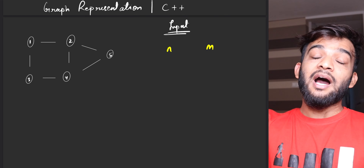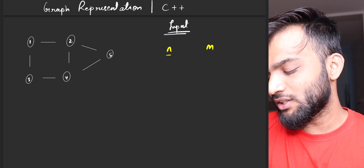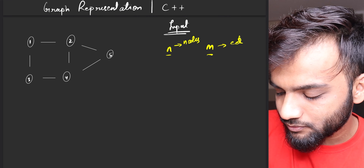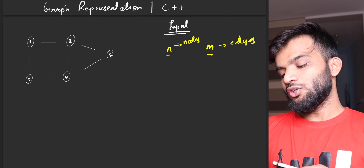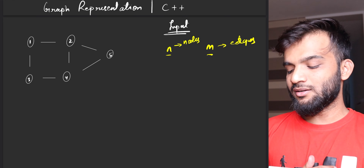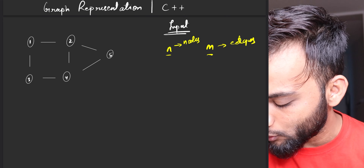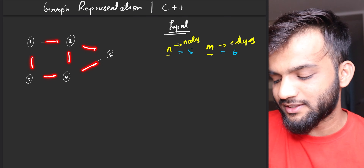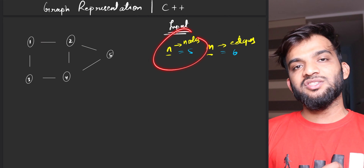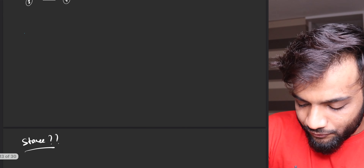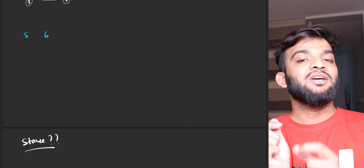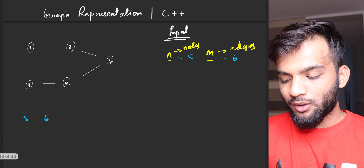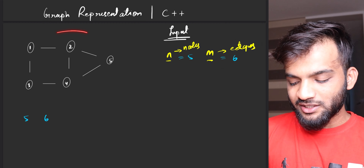If it says 'given an undirected graph which contains n nodes and m edges,' n will be given to you. Here the number of nodes is five and the number of edges is six. In the input, five and six will be given — the first is nodes and the next is the number of edges.